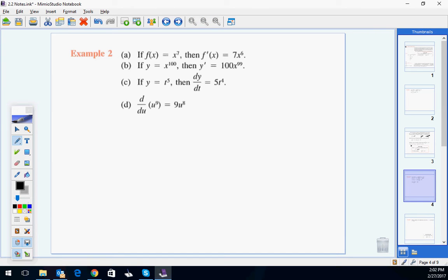So for example, let's do these ones. So f of x is x to the 7. f prime of x, derivative. Drop the 7. Subtract 1. 7x to the 6th. The kind of redundant example is say, well, x to the 100. Drop the 100. Minus 1. X to the 99. Y equals t to the 5th. Drop the 5. 5t to the 4th. And then u to the 9 equals 9u to the 8. That is the power rule.